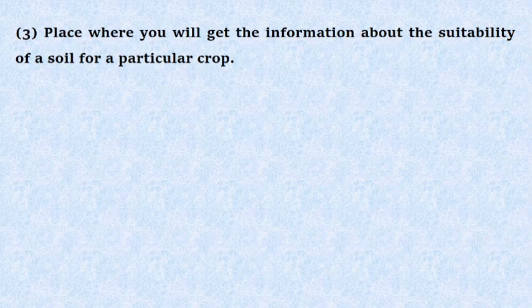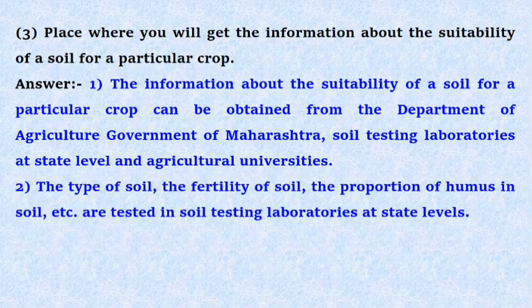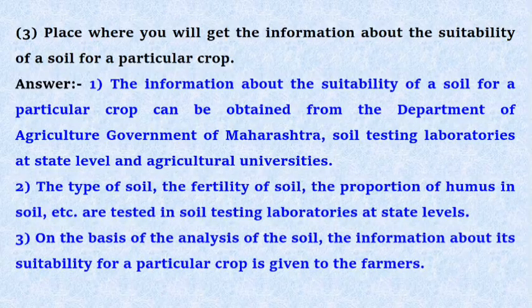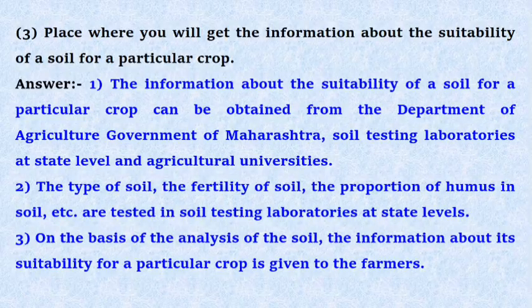Third: Place where you will get the information about the suitability of a soil for a particular crop. Answer: The information about the suitability of a soil for a particular crop can be obtained from the Department of Agriculture, Government of Maharashtra, Soil Testing Laboratories at State Level, and Agricultural Universities. The type of soil, the fertility of soil, the proportion of humus in soil, etc. are tested in soil testing laboratories at state levels. On the basis of the analysis of the soil, information about its suitability for a particular crop is given to the farmers.